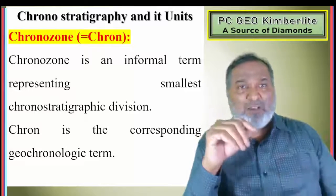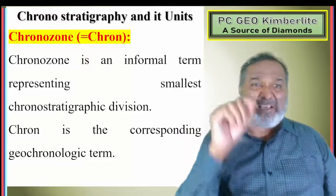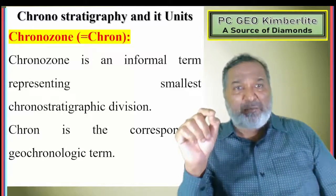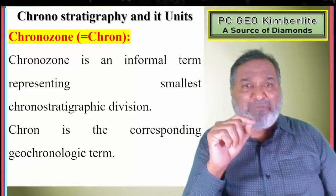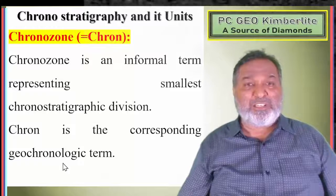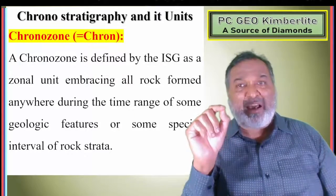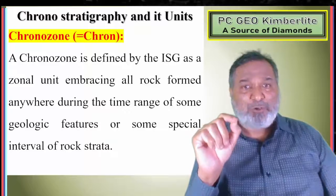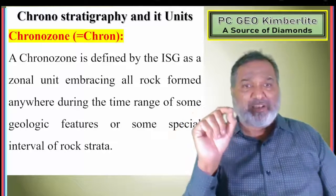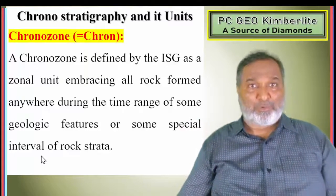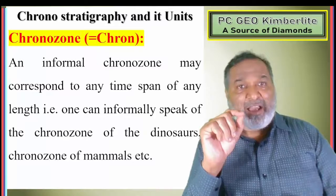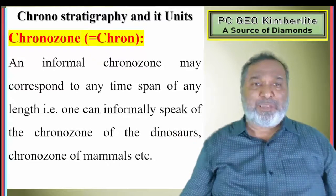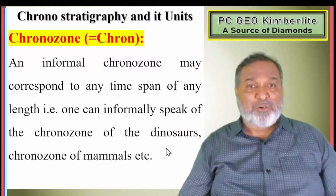Chronozone. The Chronozone is the informal term representing the smallest chronostratigraphic unit. Chron is the corresponding geochronological term. A Chronozone is defined by the ISG as a zonal unit embracing all rocks from anywhere deposited during the time range of some geological feature or special interval of rock strata. An informal Chronozone may correspond to any time span of any length — for example, the chronozone of the dinosaurs or chronozone of brachiopods.